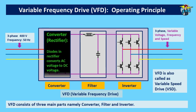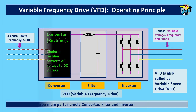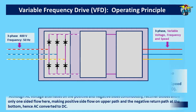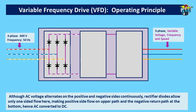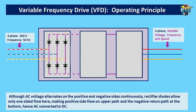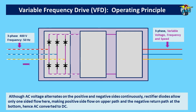Converter is also called as rectifier, and the diodes assembled in it allow current to flow in only one direction, converting AC into DC. Although AC voltage alternates on the positive and negative sides continuously, rectifier diodes allow only one-sided flow, making the positive side flow on the upper path and the negative return path at the bottom, hence AC is converted to DC.